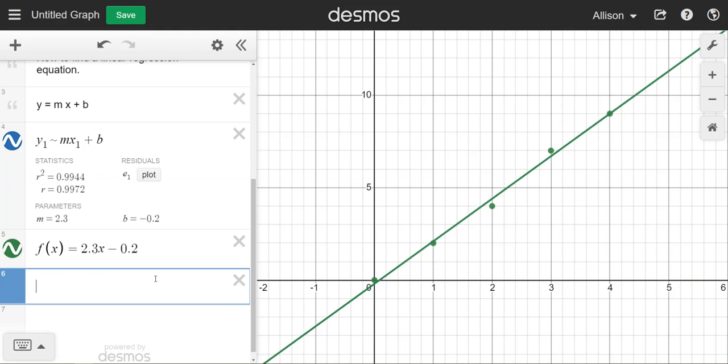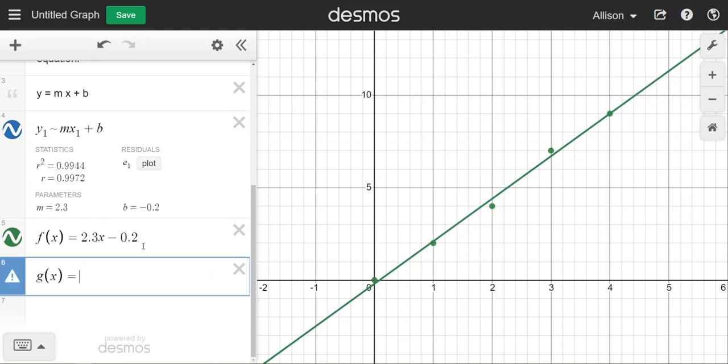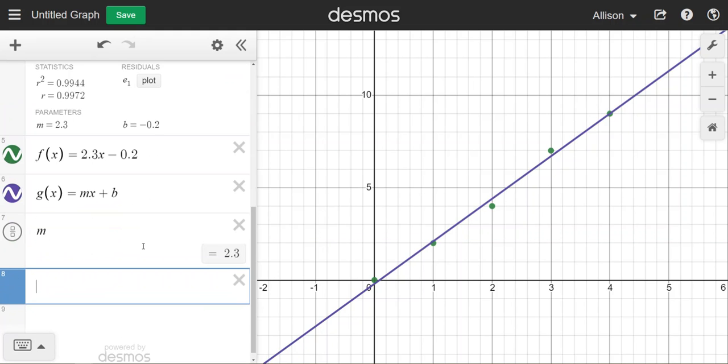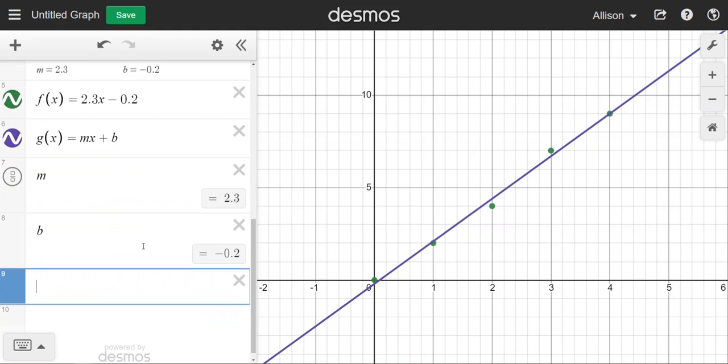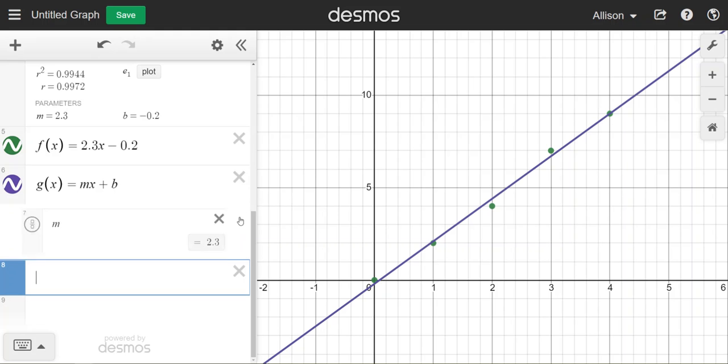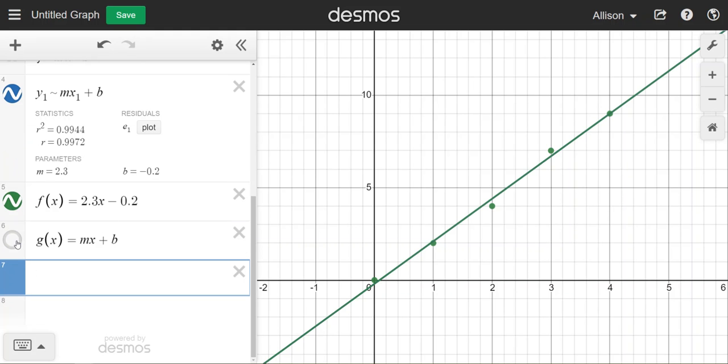Also, if I had more difficult to write parameters for m and b - if they were longer, had more decimal places, if I needed more accuracy - I could also write it with the letters m and b, because m and b have now been defined to be equal to those parameter values. So there are a couple of different ways that I can write the expression. You can see that all of these line up on top of the regression equation.